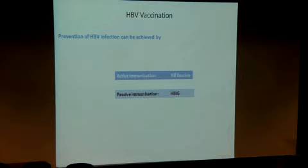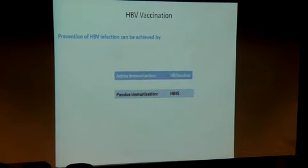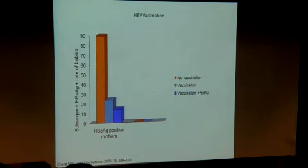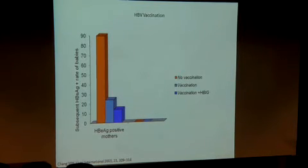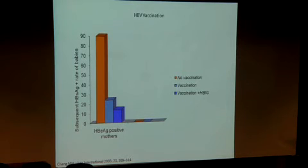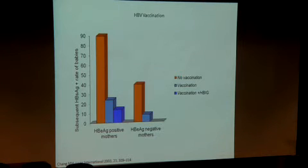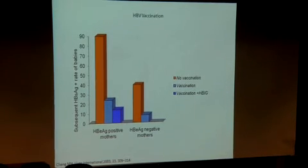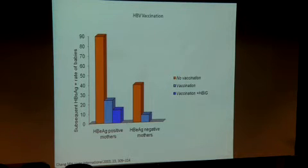Prevention of Hepatitis B infection can be achieved by either active immunization, which is vaccination, or passive immunization, which is using Hepatitis B immunoglobulin, or a combination of both. The orange bar shows what happens to a child of an E-antigen-positive mother without vaccination; the shorter blue bar shows outcomes with vaccination; and the darker blue shows vaccination plus HBIG. E-antigen-negative mothers transmit the virus less to their children than E-antigen-positive mothers.